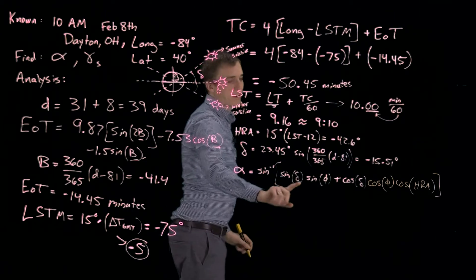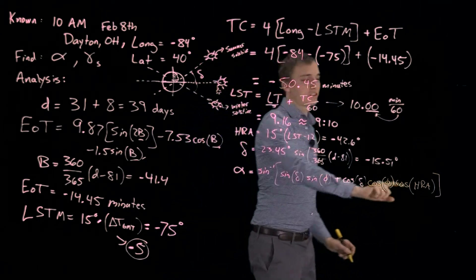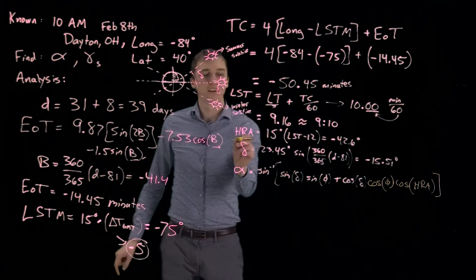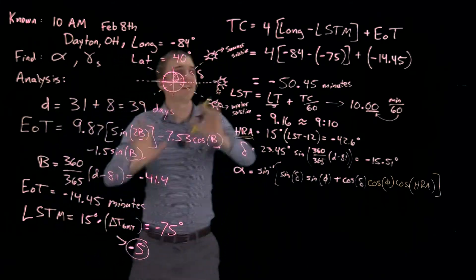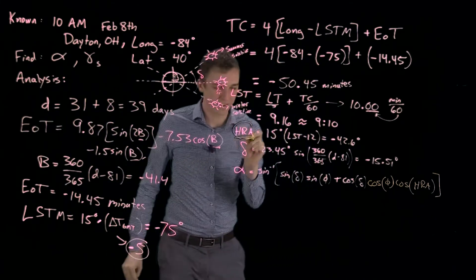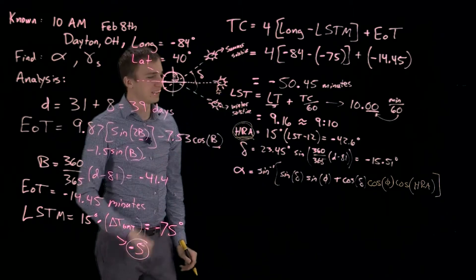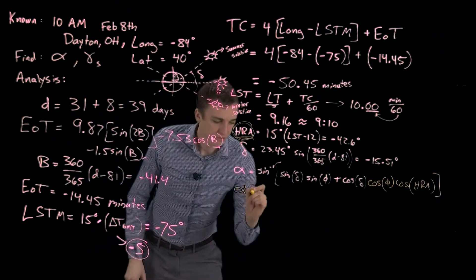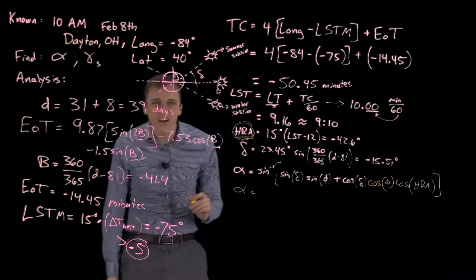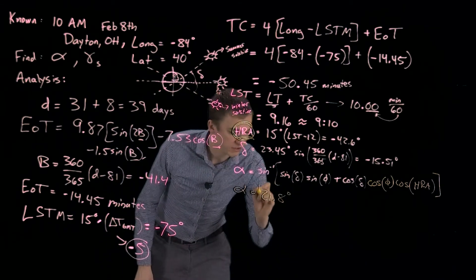So we put in our declination angle, our latitudes, and the HRA, which was everything we did here all the way up to this point was to find the hour angle or the angle of the sun in the sky. When we do that, we get an alpha of 21.8 degrees.